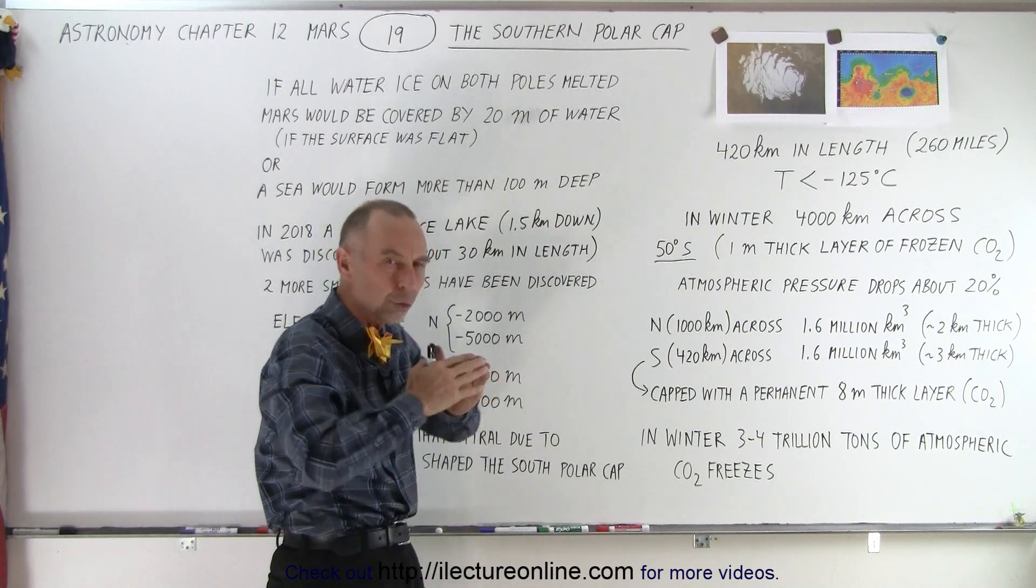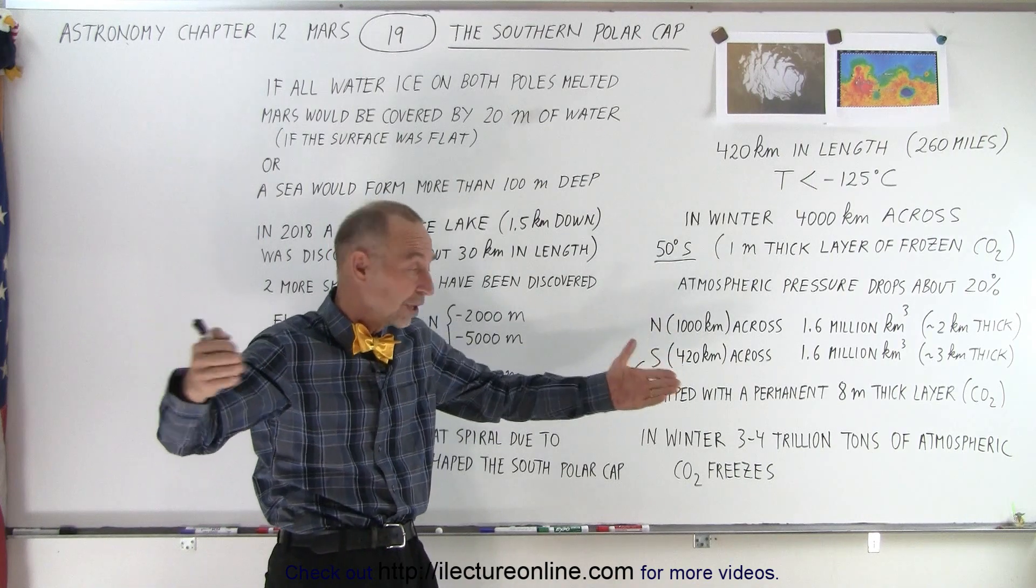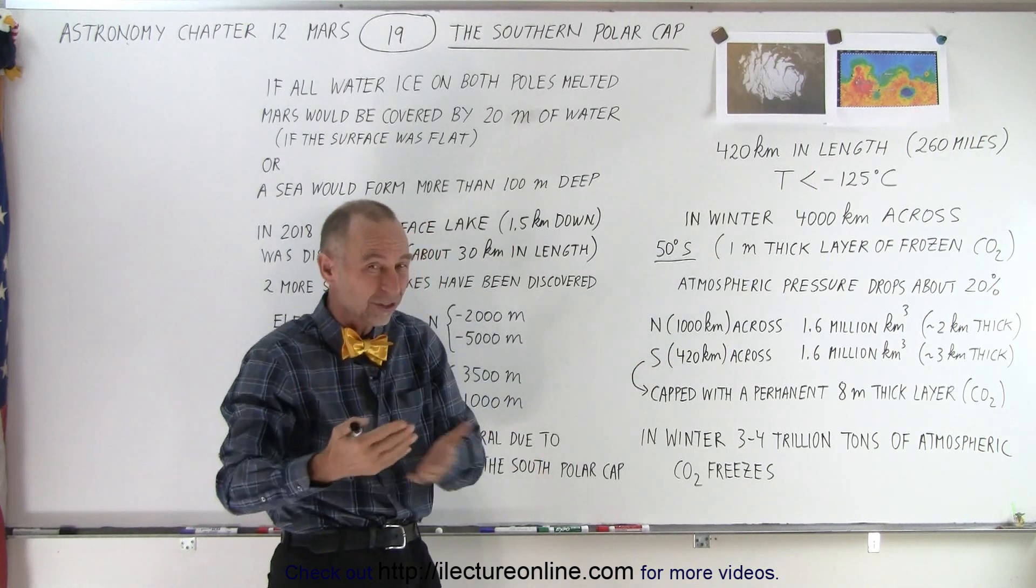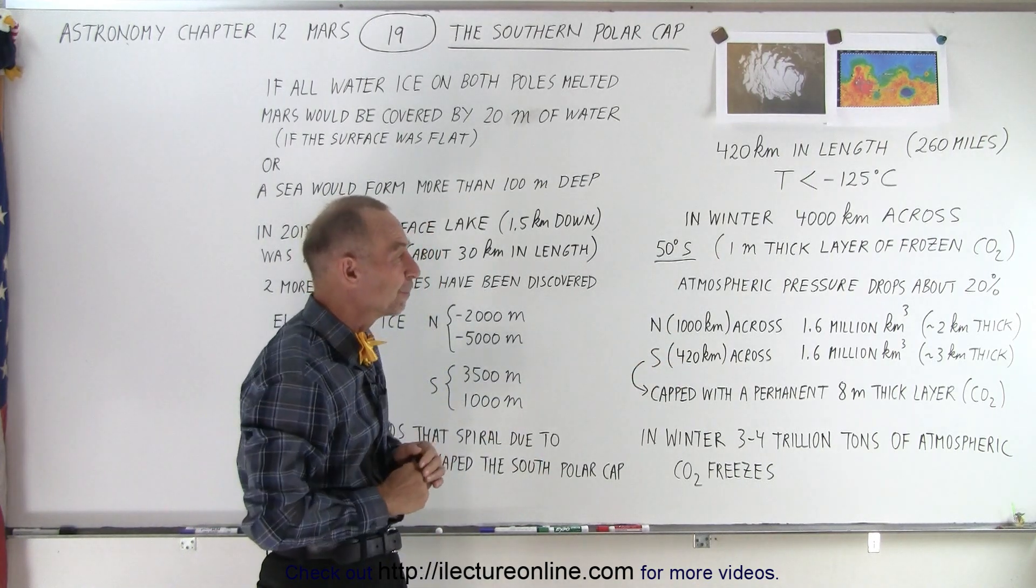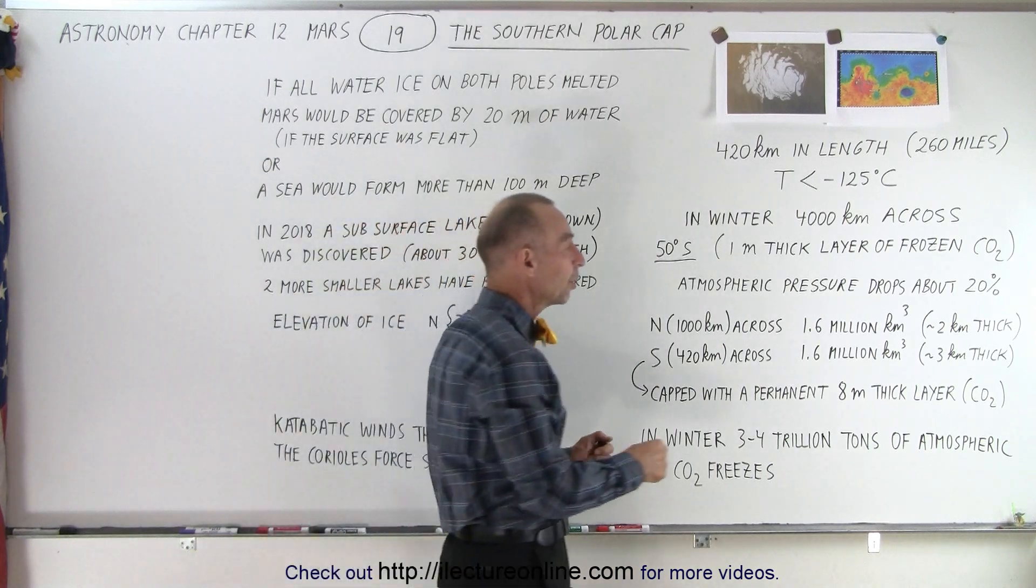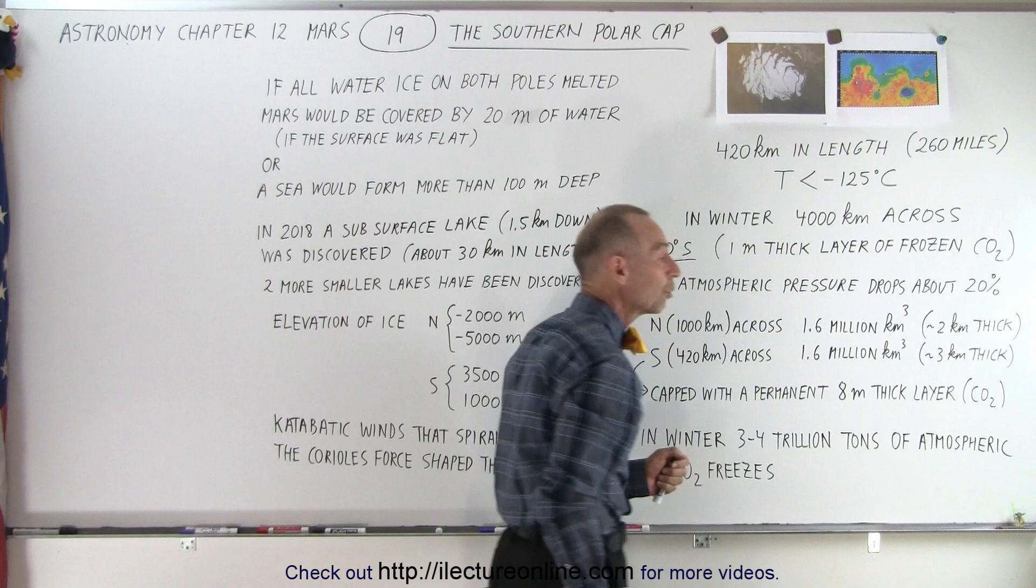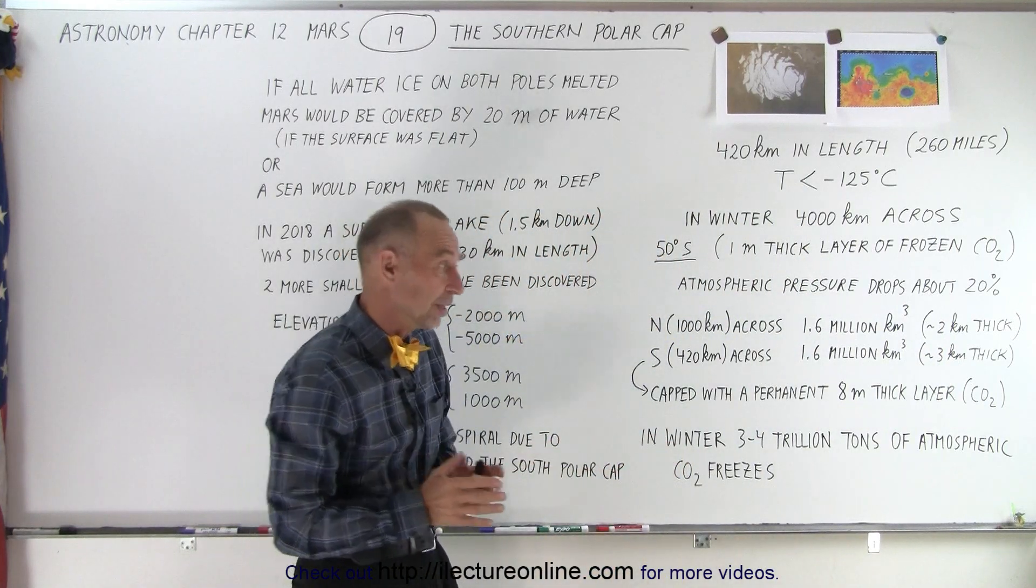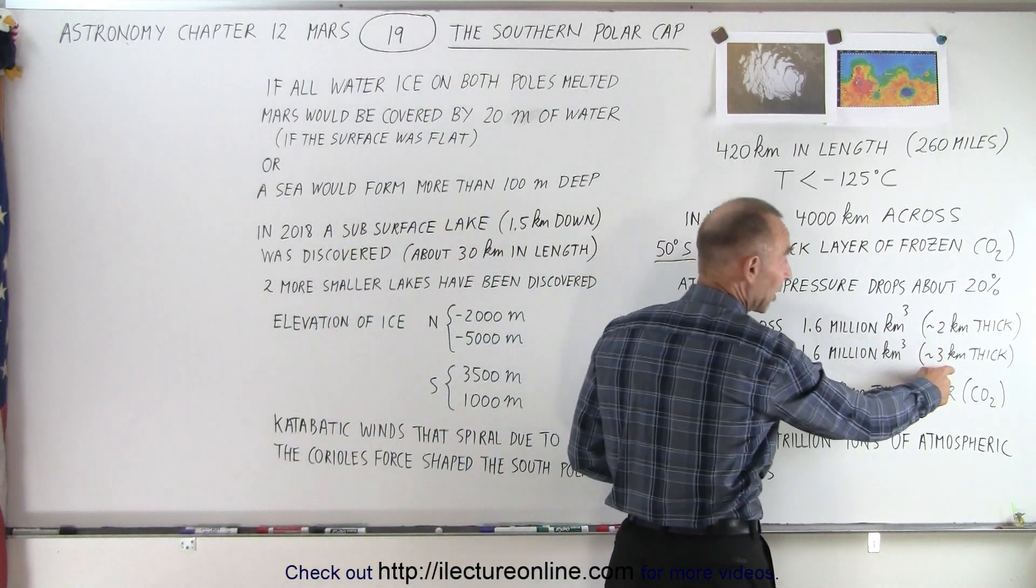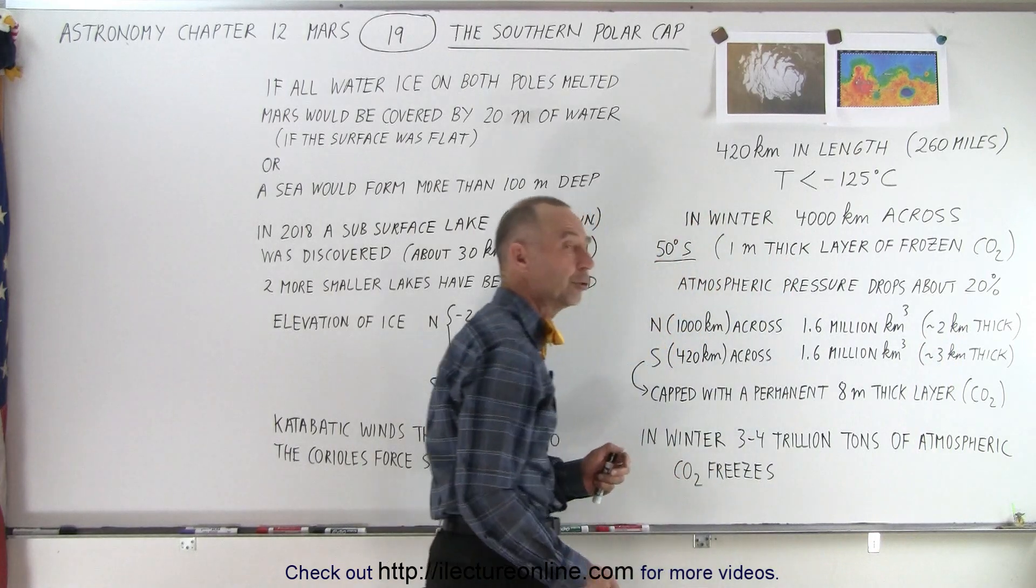Now you say, well wait a minute, if the Northern Polar Cap is much larger than the Southern Polar Cap, how come there's the same amount of water ice in it? Well, for one thing, the Southern Polar Cap is thicker, about 3 kilometers thick where the Northern Polar Cap is about 2 kilometers thick. Now that's enormous, that's almost 2 miles thick versus a little bit over a mile for the Northern Cap.